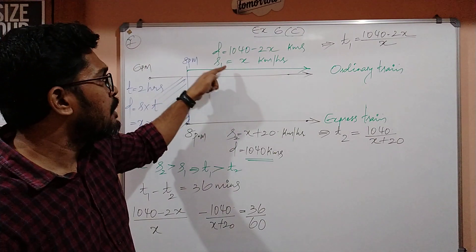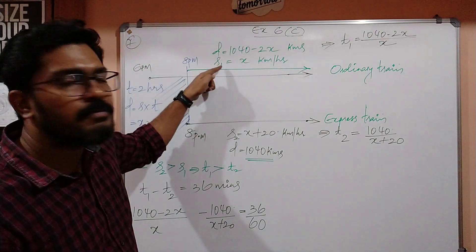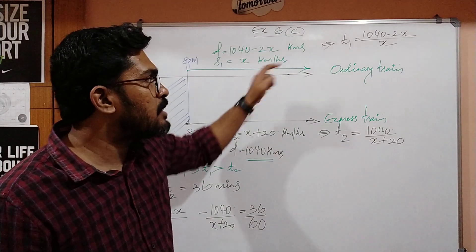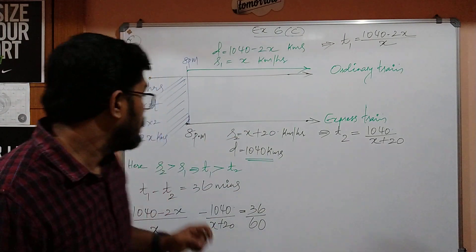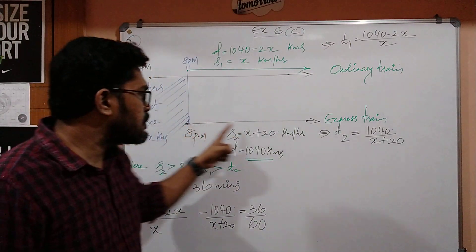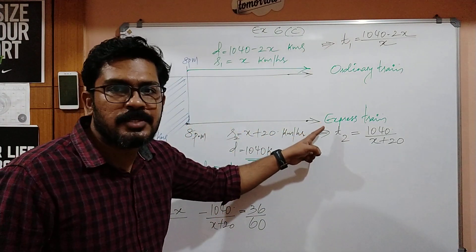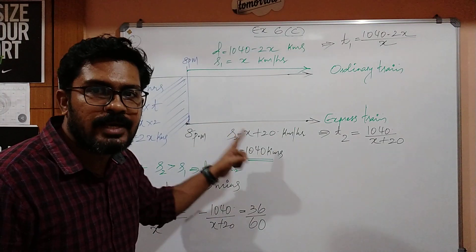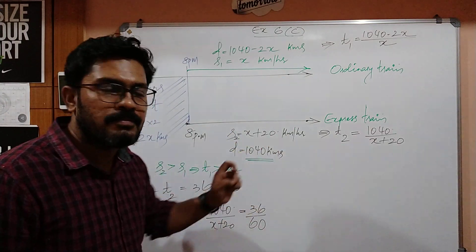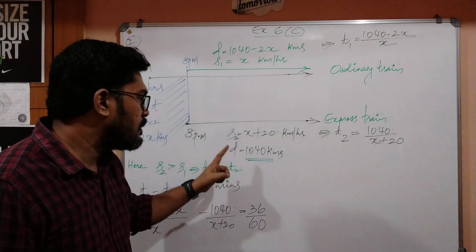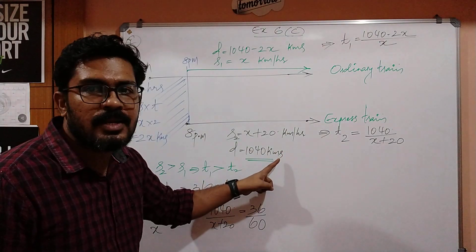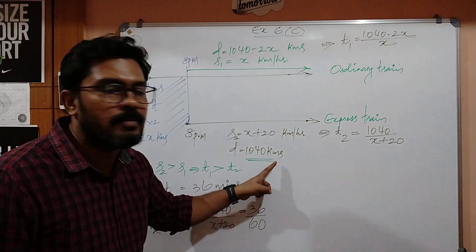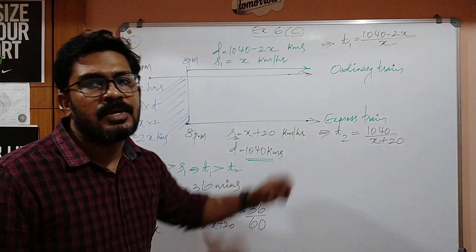First of all, the speed of the local train is assumed to be x kilometers per hour. For the express train, the speed is given as x plus 20 kilometers per hour, and the distance that the express train has to cover is 1040 kilometers in order to reach the destination.